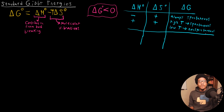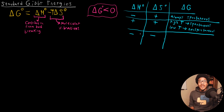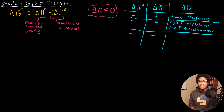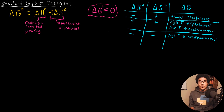What if they're both negative — delta H and delta S are both negative? We have an exothermic reaction with a decrease in entropy. Here it's going to depend again. If delta S is negative, the T delta S term becomes positive since there's a negative out front, meaning at high temperatures this positive term dominates and the reaction will be non-spontaneous. At low temperatures, the negative delta H dominates the delta G expression, so you have a spontaneous reaction.